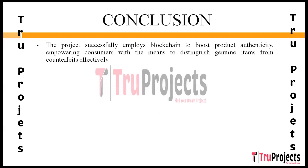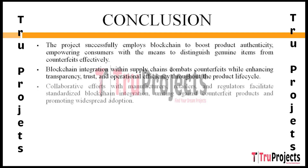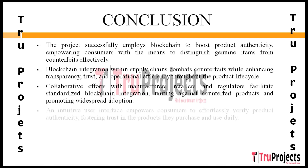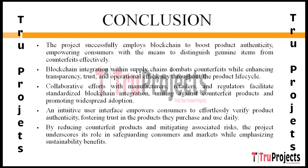In conclusion, the project harnesses blockchain to empower consumers in distinguishing genuine items from counterfeits, bolstering trust in their purchases and product usage. Blockchain integration within supply chains effectively combats counterfeit products, elevating transparency, efficiency, and trust throughout the product journey. Collaborative efforts with manufacturers, sellers, and consumers foster standardized blockchain integration protocols, fighting counterfeits across diverse industries. The project delivers a user-friendly interface for consumers, simplifying product authenticity verification. By diminishing counterfeit products and associated risks, the project acts as a guardian for consumers and markets, underscoring the sustainability merits of supporting authentic products.